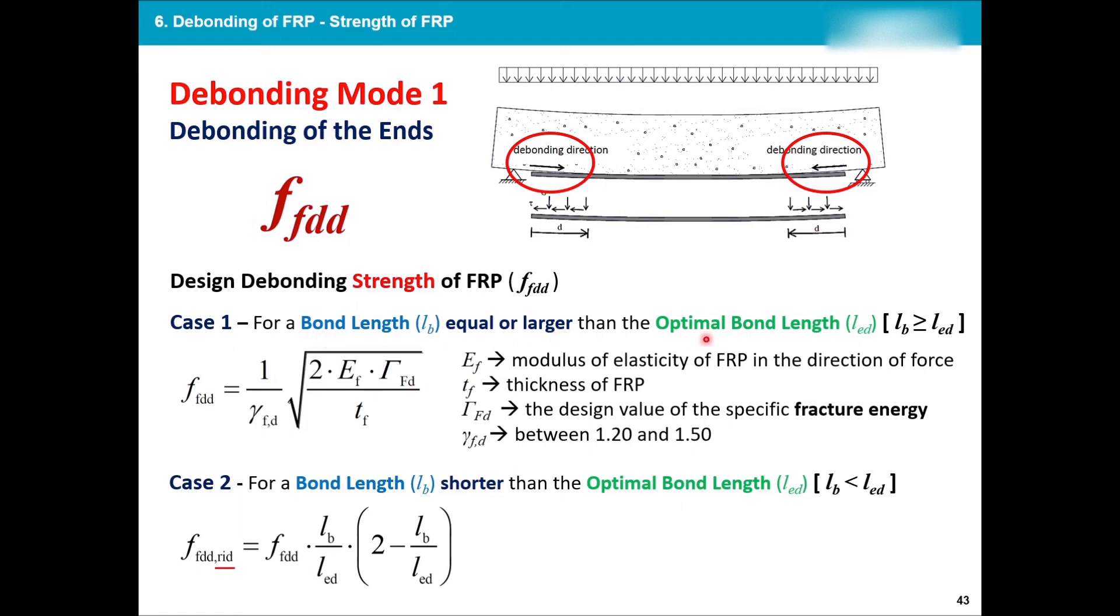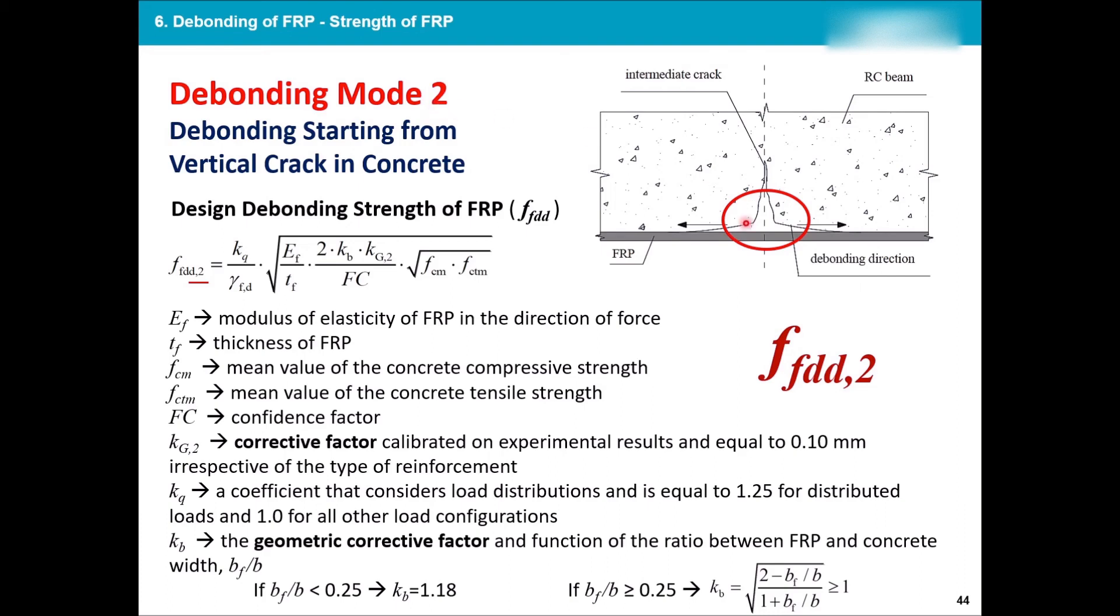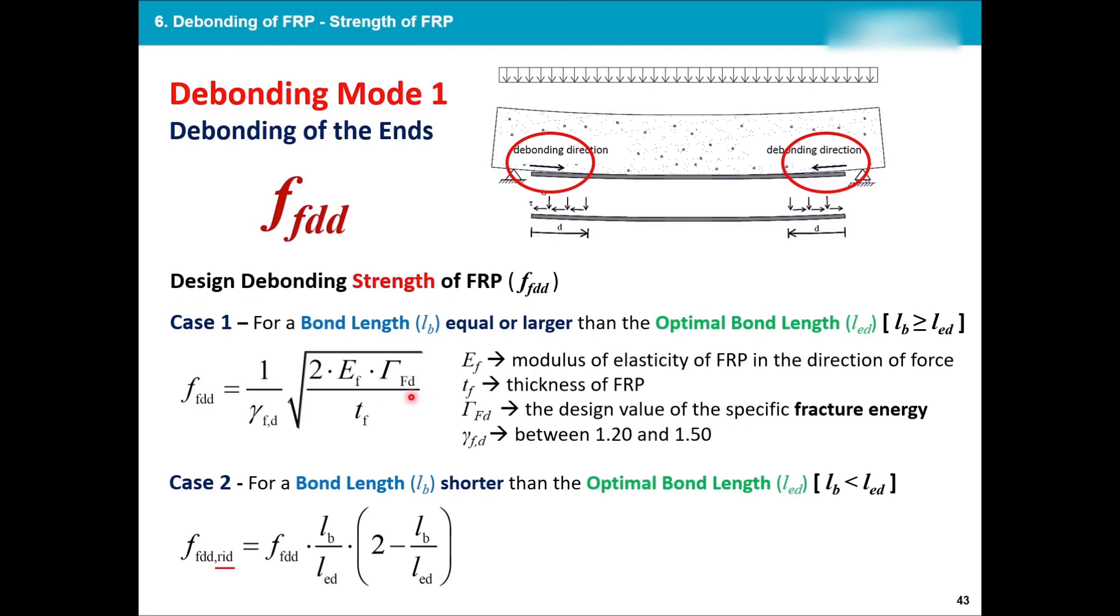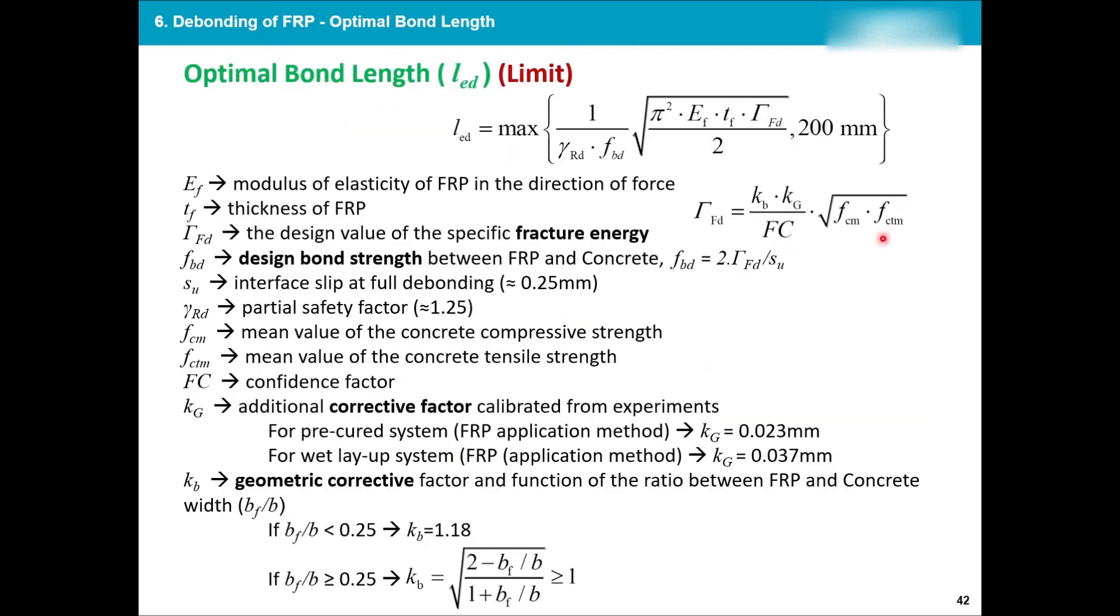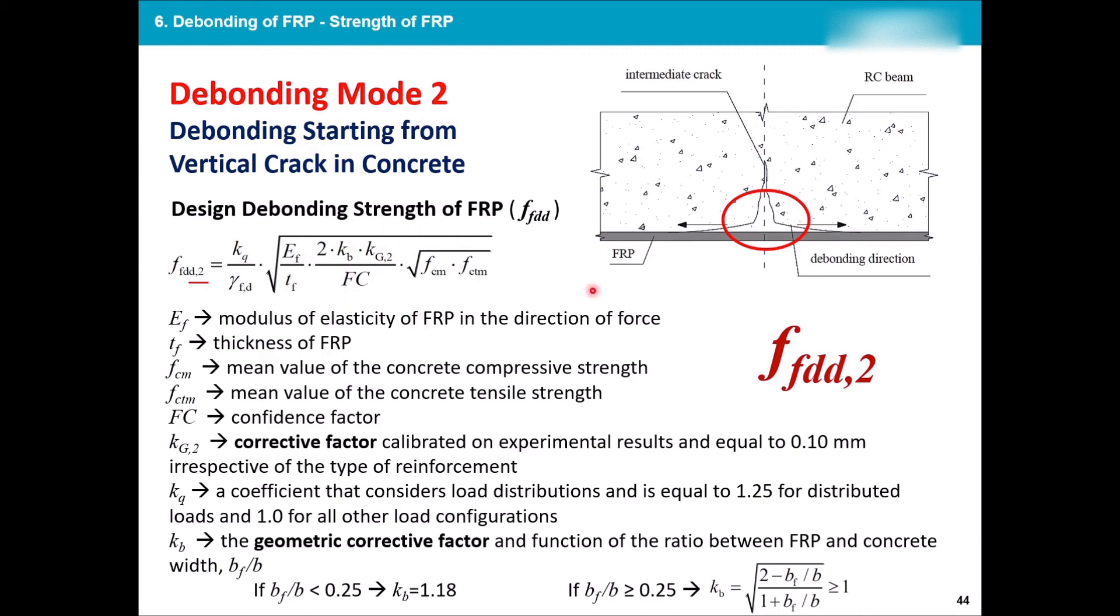Now going back to Case 1. So if the bond equal or larger, this is the design, the bonding strength of FRP. If the bond length is shorter than the optimal bond length, then the same formula is multiplied by some lengths of bond length and optimal bond length to make it a little bit lower. Now if it's debonding number two and it's happening at any other point than the ends, you see the design bonding strength of FRP, the same f_dd, will be different. We have added the number two beside it to make sure that it indicates Mode 2 is happening. And as you can see, the formula is a little bit longer than this. So this one had the fracture energy, which on its own was this.